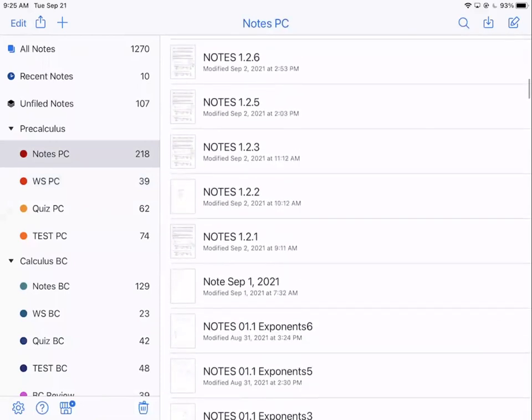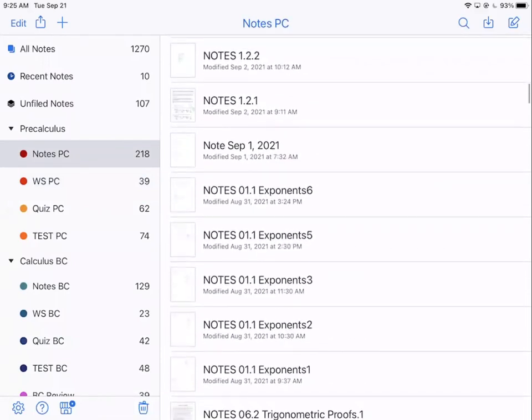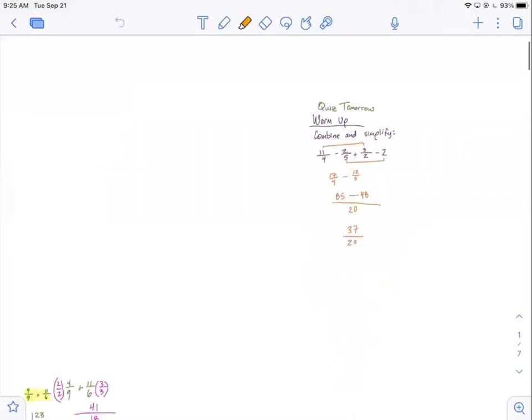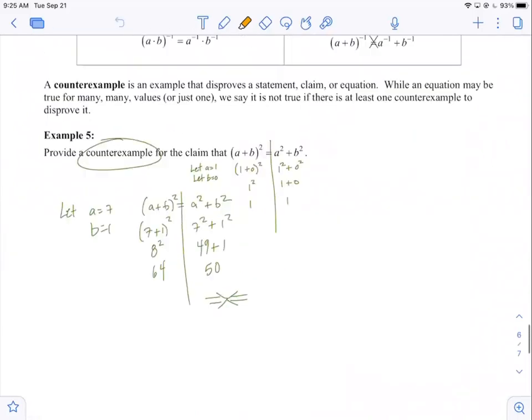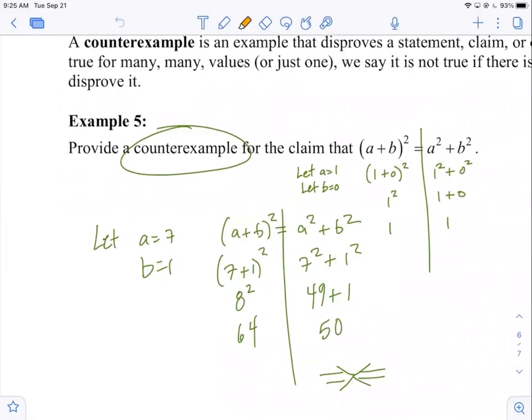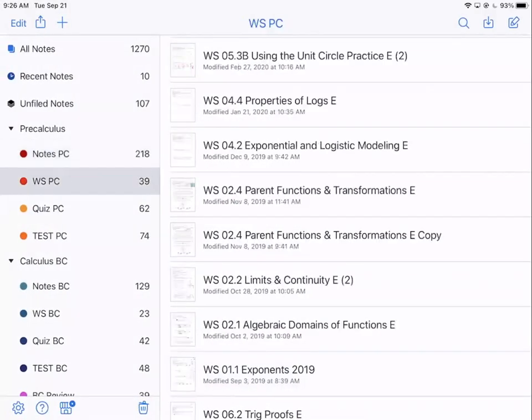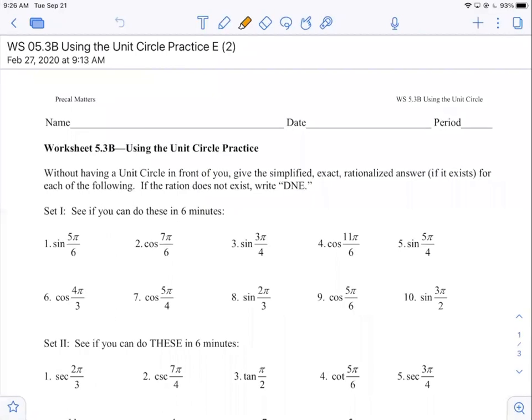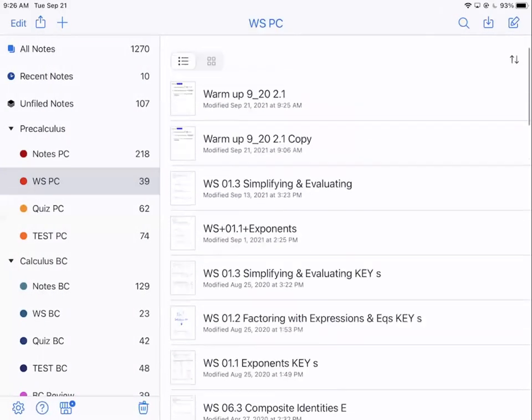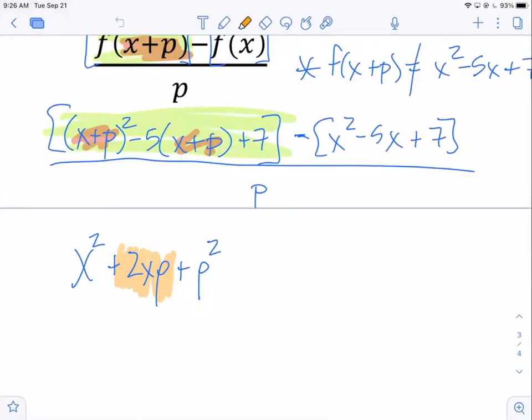All the way back to 1.1. Remember example five? We had a counterexample that proved that a plus b quantity squared was not a squared plus b squared because 64 doesn't equal 50. Remember? So it is equal to a squared plus 2ab plus b squared. So yeah, don't be making those mistakes this late in the game. So there we go. Square, multiply, double, square. Or foil it off to the side.